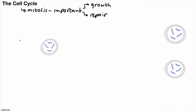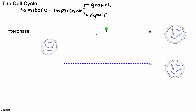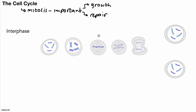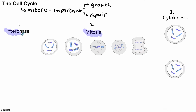There are various parts of the cell cycle. The first part is called the interphase, and the interphase is followed by mitosis. Then we have cytokinesis. So these are the three stages of the cell cycle: one, two, and three. We'll take a look at mitosis in a moment, but firstly let's look at the interphase.